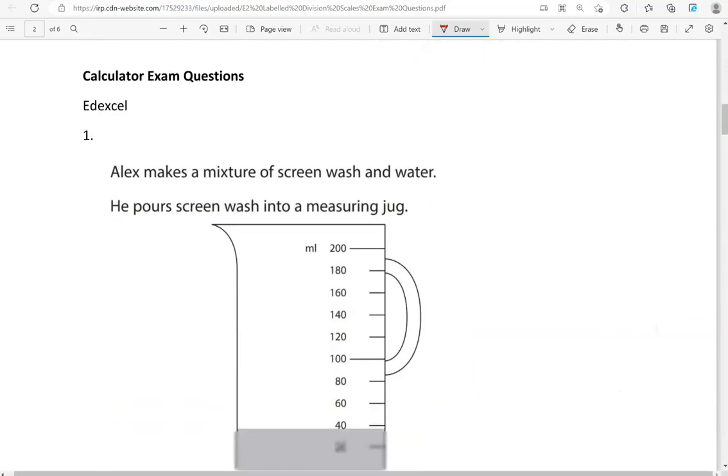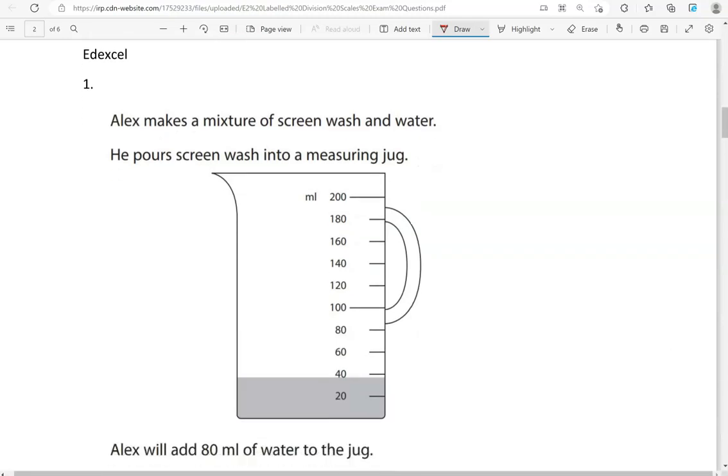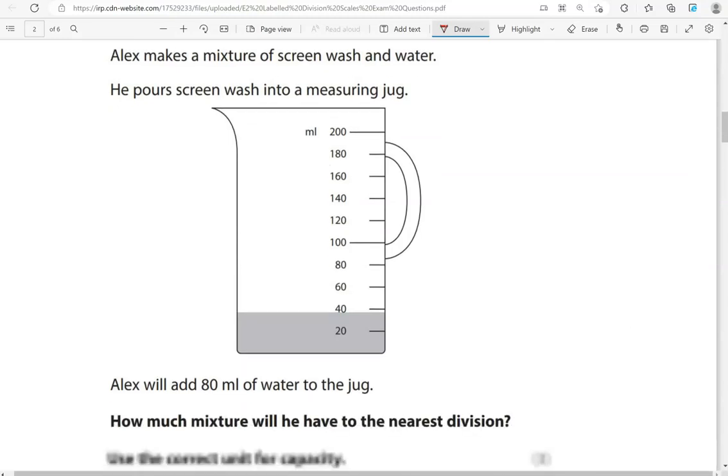And we're moving to the calculated questions. Alex makes a mixture of screen wash and water. He pours screen wash into a measuring jug. Alex will add 80 milliliters of water to the jug. How much mixture will he have to the nearest division? Use the correct unit for capacity.